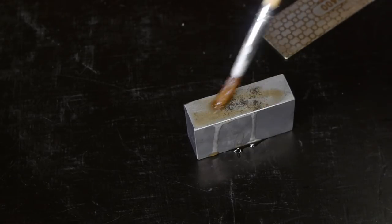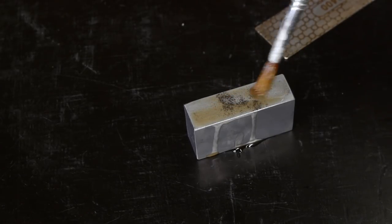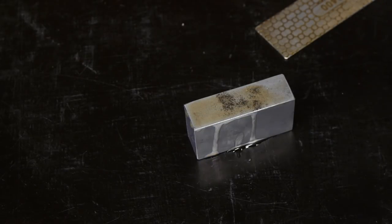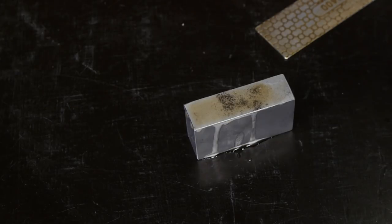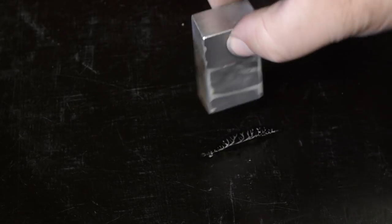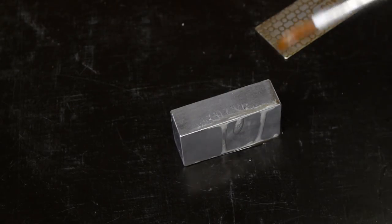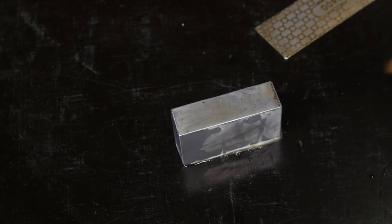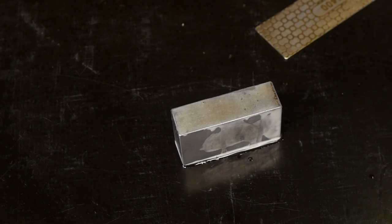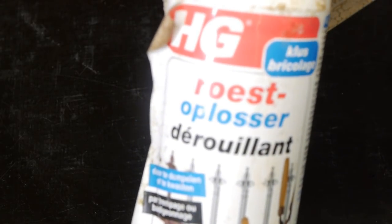This is some rust dissolver. It can do its job while I go for some breakfast. It's a very mild acid, I don't think it does anything to the steel. If you can't read it, Google Translate will help you out.